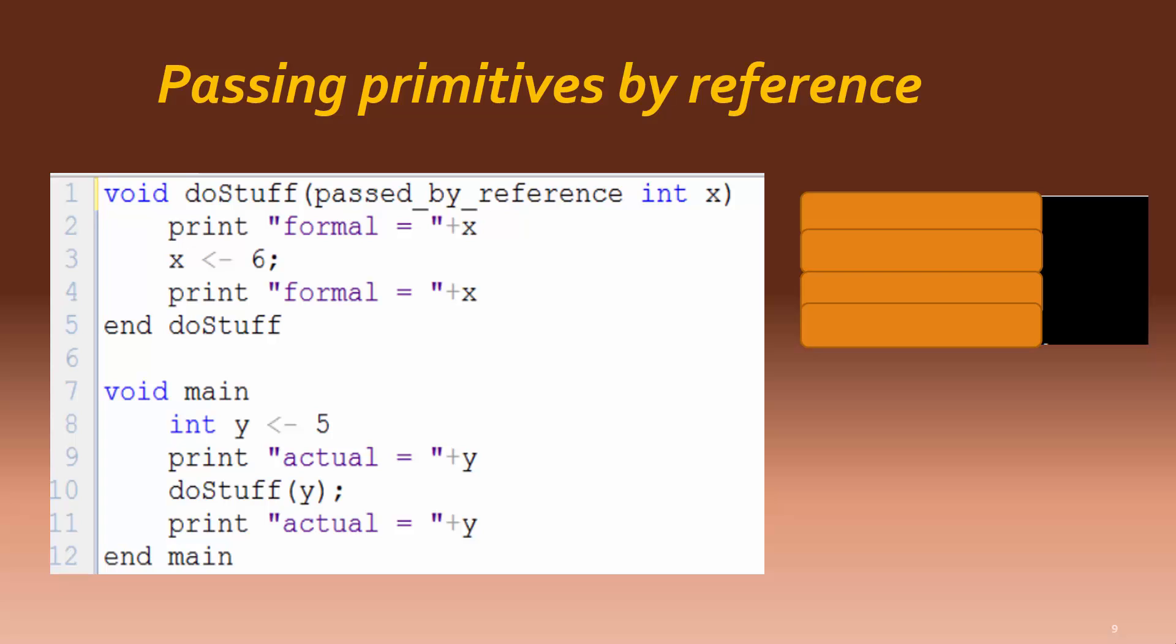Passing by reference happens when the memory location or address of the value is being passed. Since that is the case here, the formal parameter will have direct access to the actual parameter's value, using the same memory location. And any changes made to it using the formal parameter are also made to the value referenced by the actual parameter, since it is the same memory location.